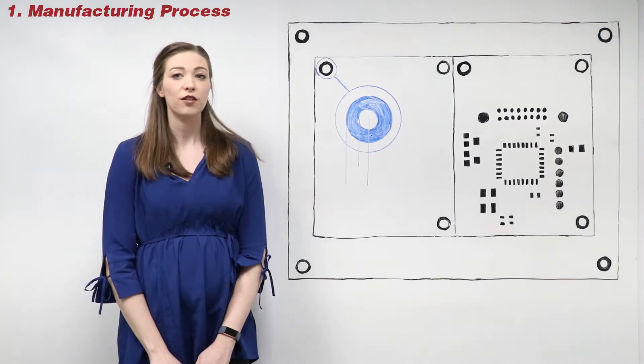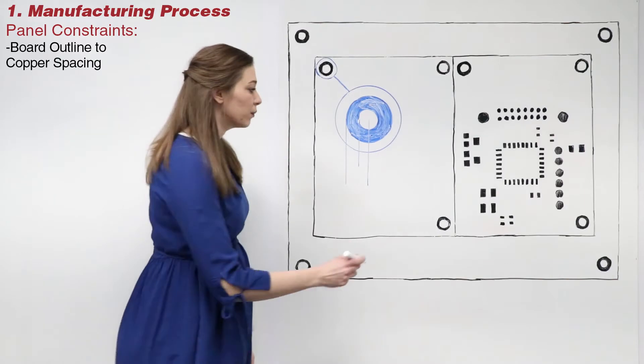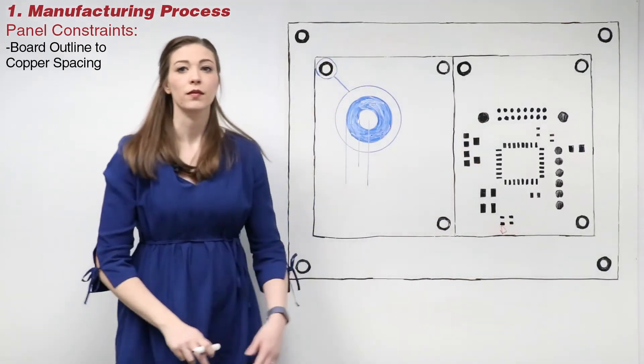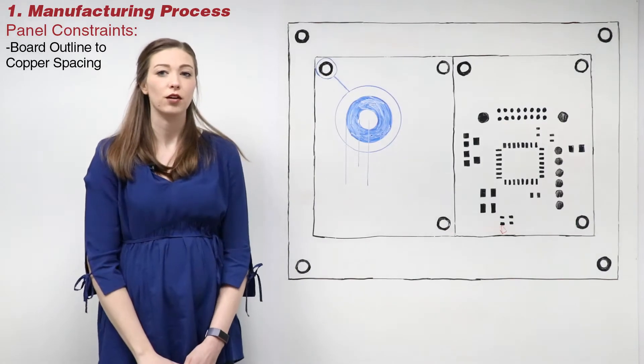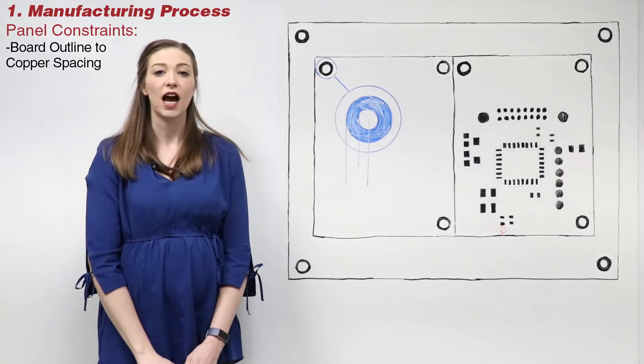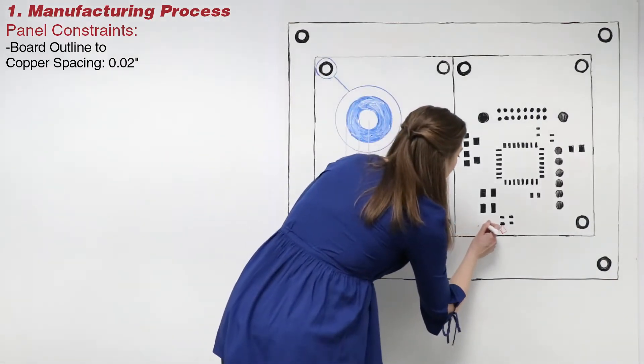The creation of the panel used for manufacturing will require additional constraints. Space must be allotted between the board outline and the copper. This will allow the creation of the panel, manufacturing, and separation to be accomplished. Please note, according to IPC specifications, you should include a 0.02 inch clearance.